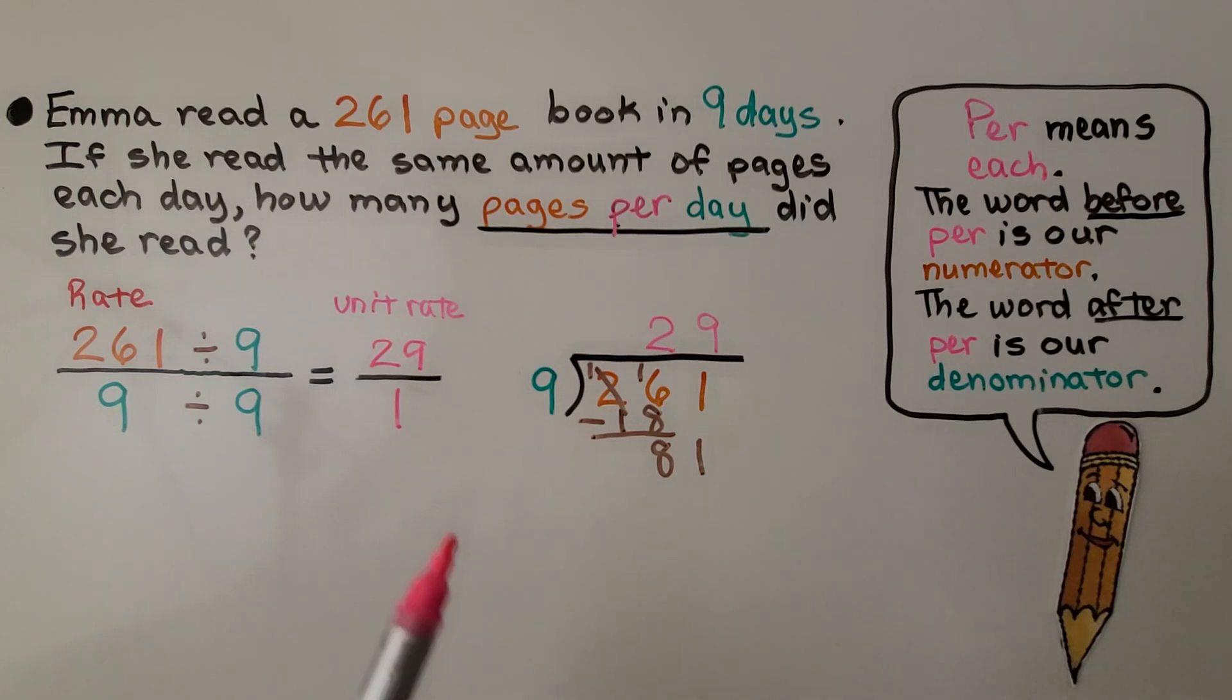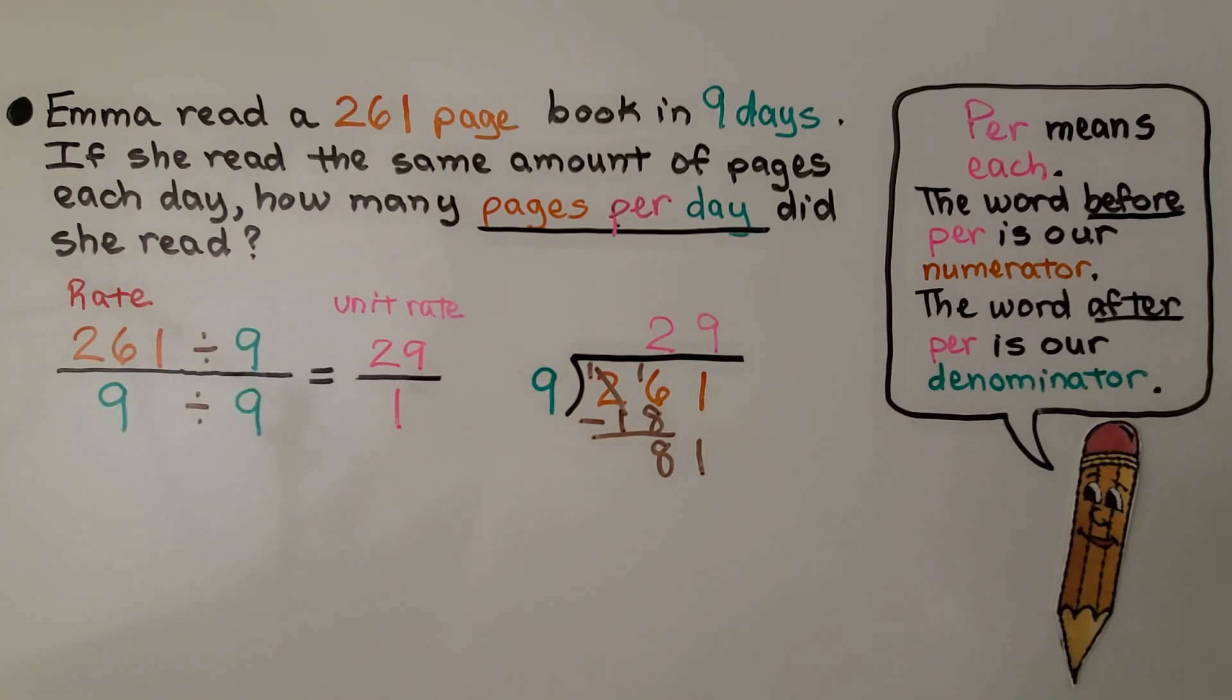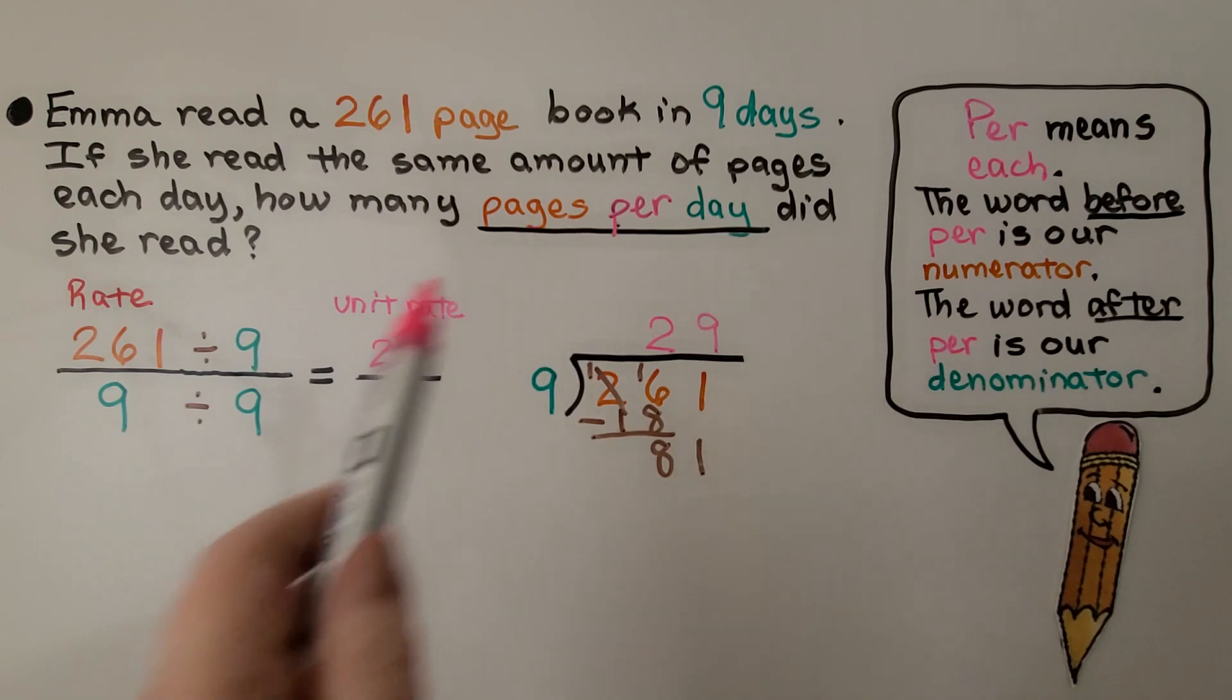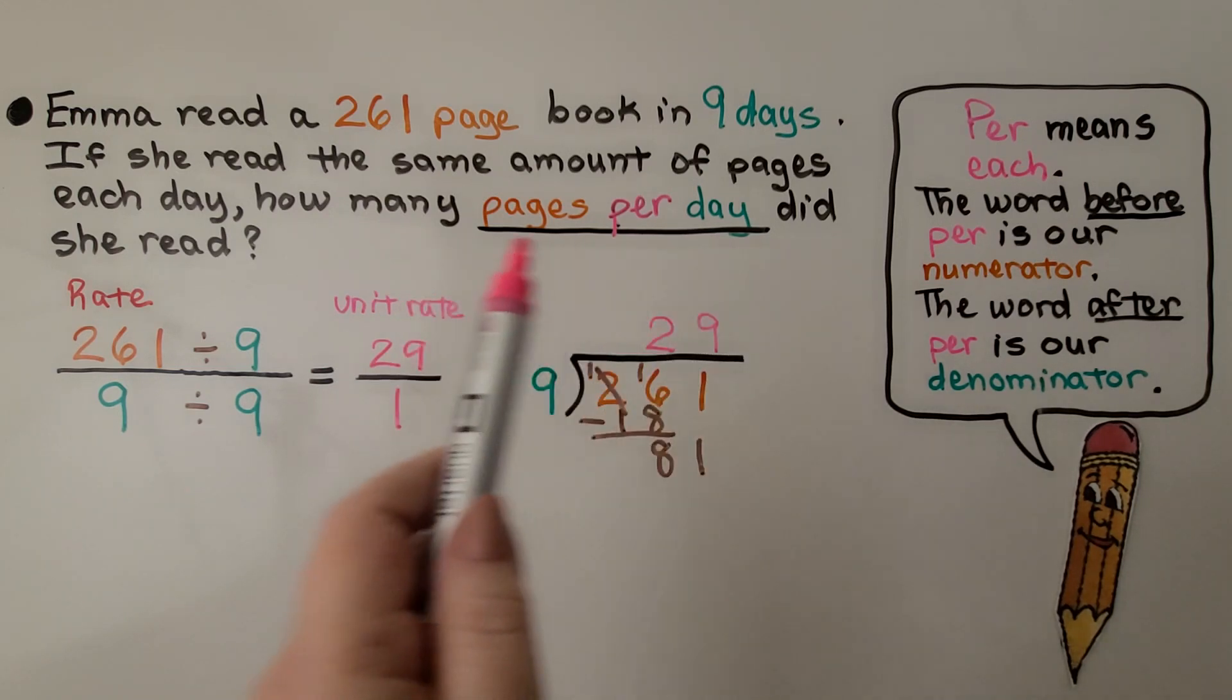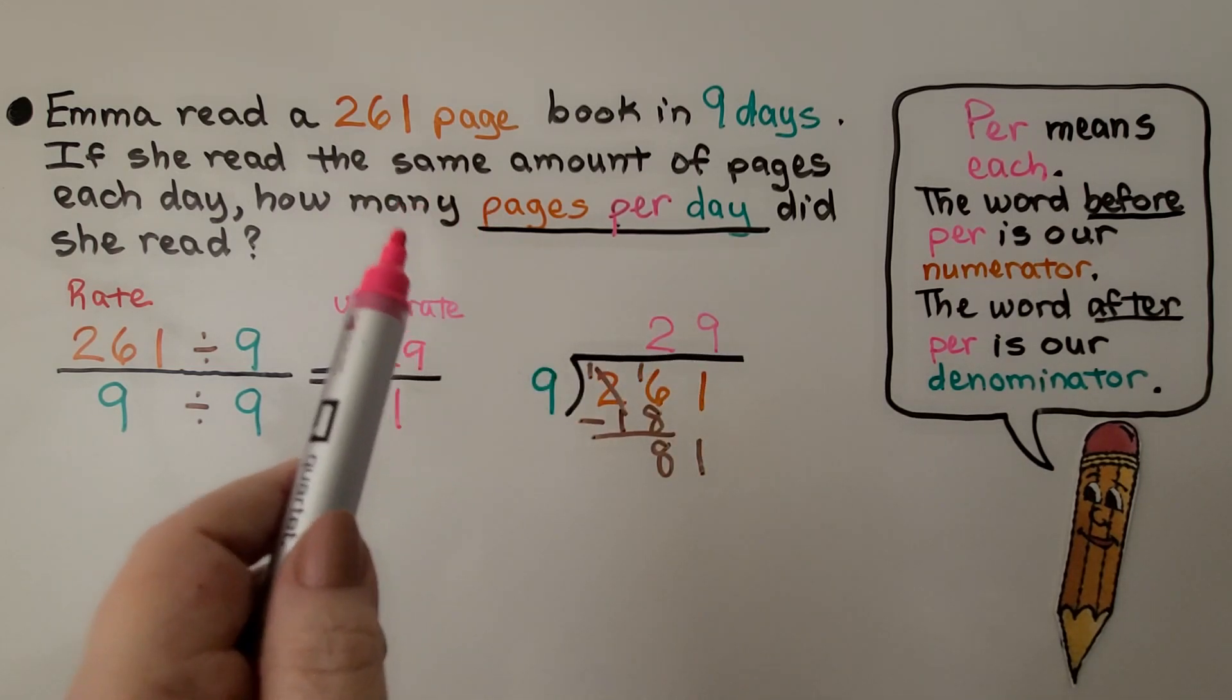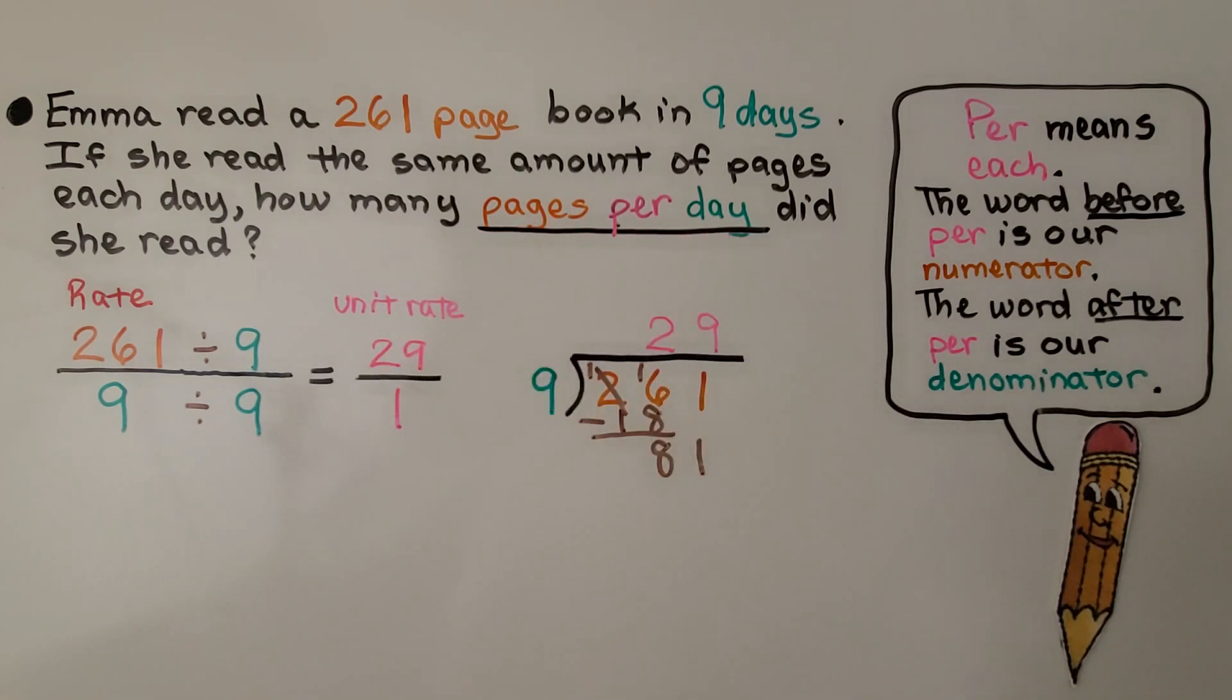That means our unit rate is 29 in one day. We know Emma read 29 pages per day. So be careful when you're writing your rate. Remember this rule: the word before per is the numerator and the word after per is the denominator. It may not be written pages per day or dollars per hour, but if you look at the word problem, you'll figure out that's what is happening.